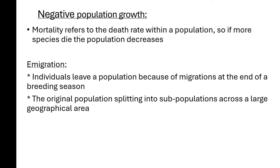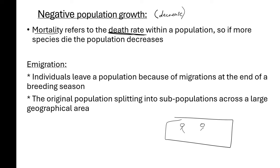A negative population growth means there is a decrease in the number of species in that population. What can decrease the number of species is mortality. Mortality is the death rate within a population — how many animals are dying. If a population is decreasing because of that death rate, that is mortality. Mortality will always result in negative population growth. For example, if we have a population of three species and one of them dies, the population decreases. So mortality contributes to a negative population growth.